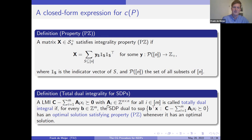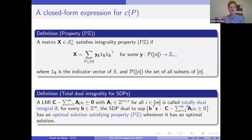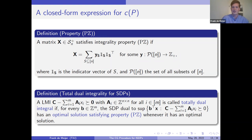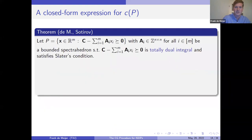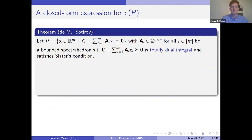Having this property we can define total dual integrality for SDPs. A linear matrix inequality where all data matrices are integral is called totally dual integral if for any integral vector b, the SDP dual to this semi-definite optimization problem always has an optimal solution satisfying property PZ whenever it has an optimal solution. This looks very similar to the TDI condition for polyhedra. This can be used to identify integral spectrahedra, and also to find a closed-form expression for certain spectrahedra by the following result: suppose we have a spectrahedron P with integral data matrices A_i, which is bounded, has a totally dual integral linear matrix inequality, and satisfies Slater's condition.